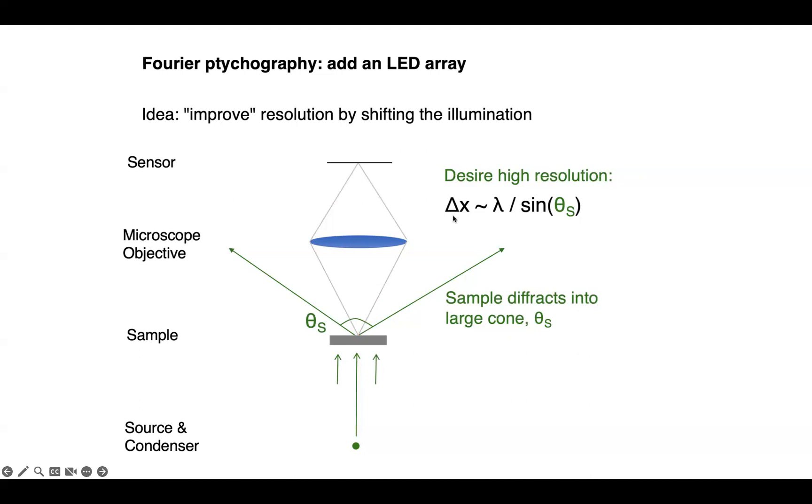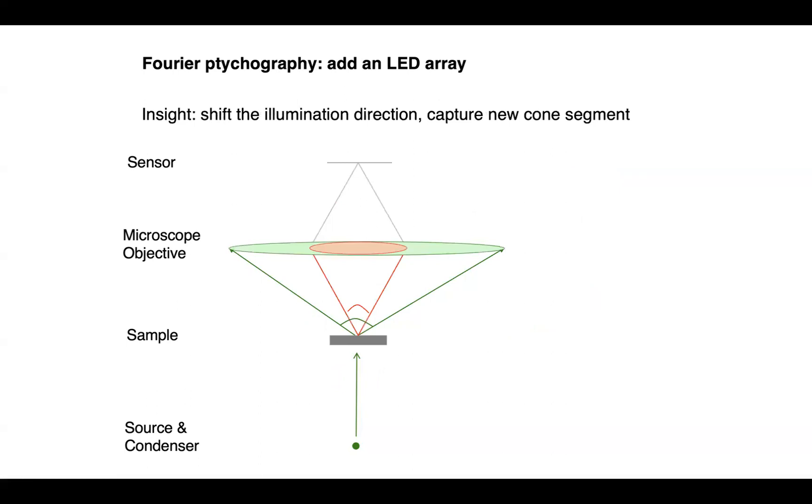So in Fourier ptychography, our goal really is to capture this large green cone of light through our small lens denoted by the red circle. To do that, we use an insight. We shift the illumination. If the illuminated light source is coming from an angle now, this green cone will rotate and a new segment of it will go through our red lens. If we shift the illumination source even more, now this green ray that was otherwise traveling at a very high angle and not getting anywhere near our red lens will go ahead and pass through the lens and onto the sensor.